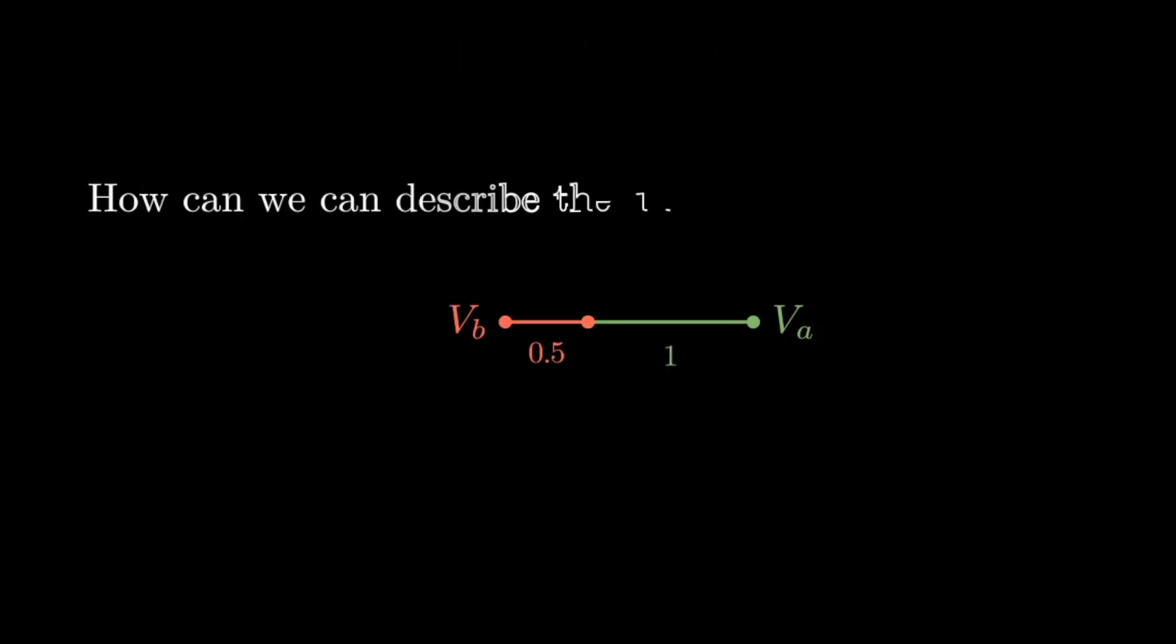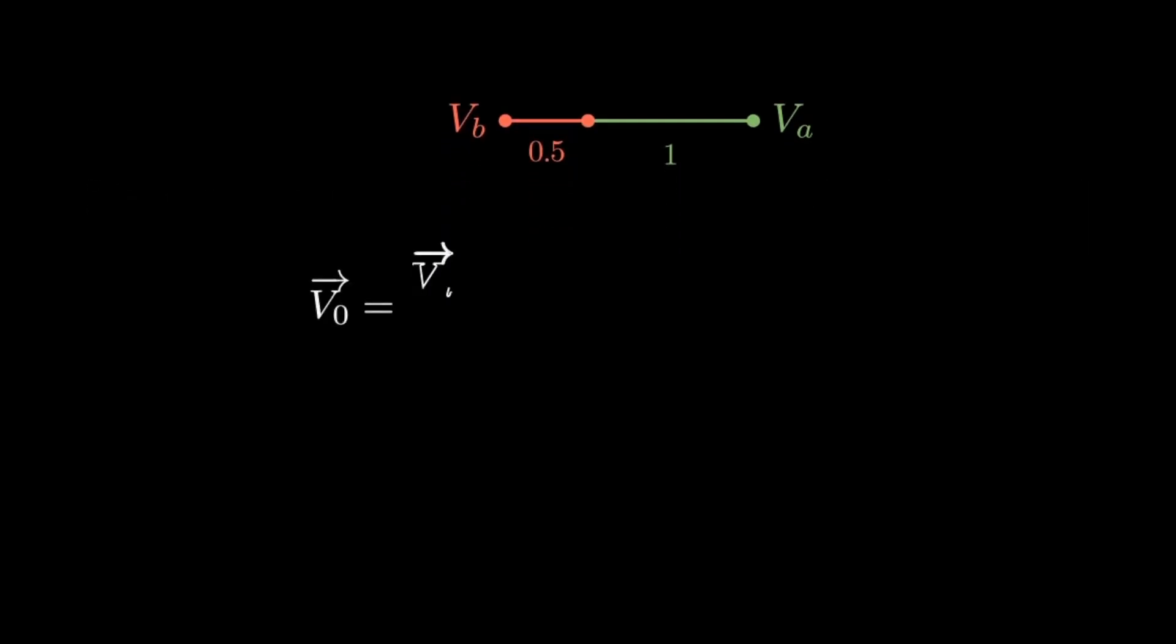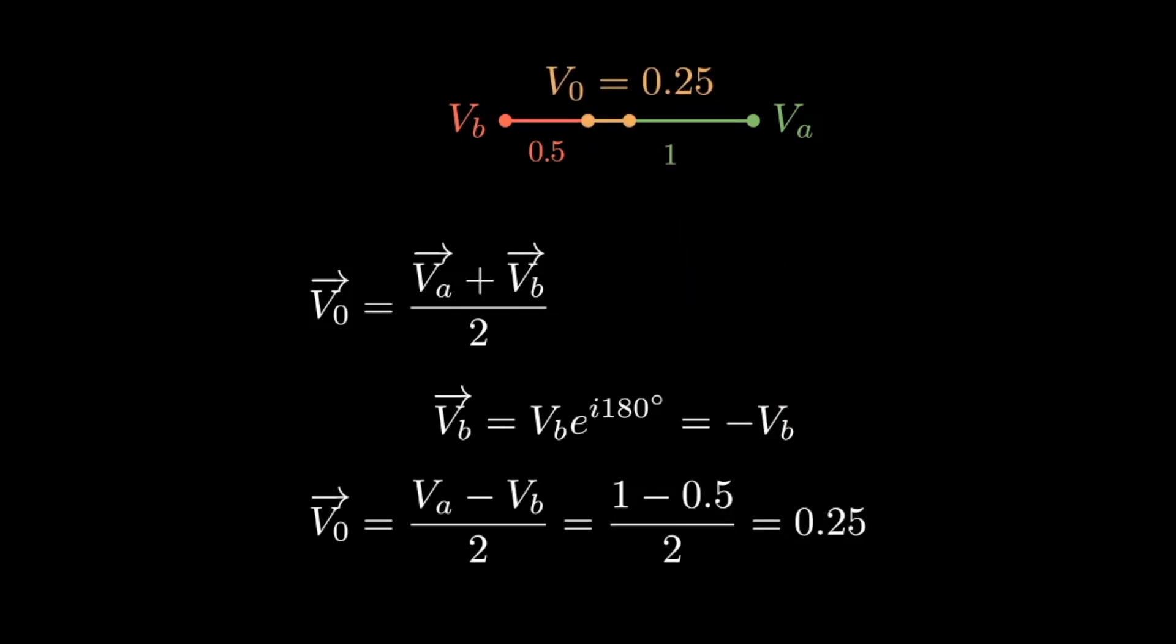How would we describe unbalance between two uneven phasors I'll call VA and VB? One thing we could try to do is take the average of the two phasors. I'll call this average the V0 component of the system. Since VB is rotated 180 degrees in complex space, it sits on the negative side of the number line, and so its magnitude is negative. Therefore, the V0 calculation just takes the difference of the lengths of the two phasors. The result is the distance between the phasor origin and the midpoint of the VA-VB line.